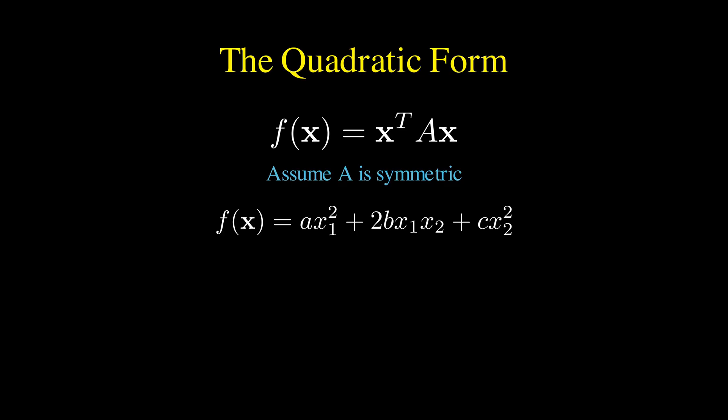To find the derivative with respect to the vector x, we calculate the gradient, which consists of the partial derivatives with respect to x1 and x2. Differentiating with respect to x1, we get 2ax1 plus 2bx2. Differentiating with respect to x2, we get 2bx1 plus 2cx2.